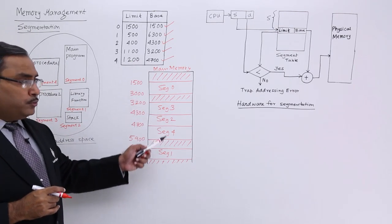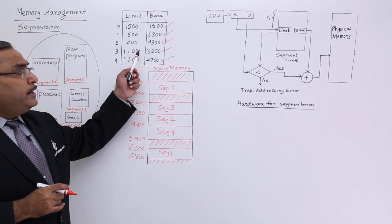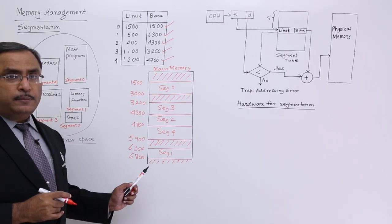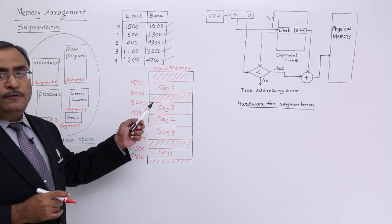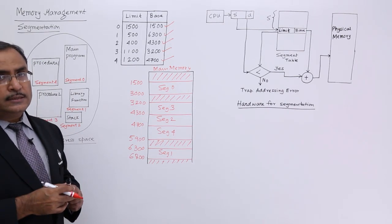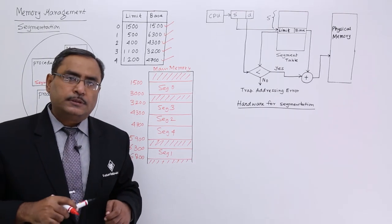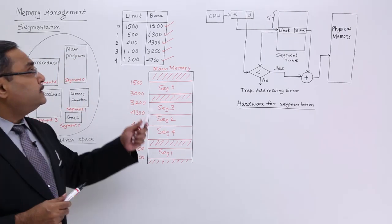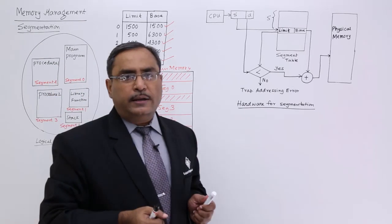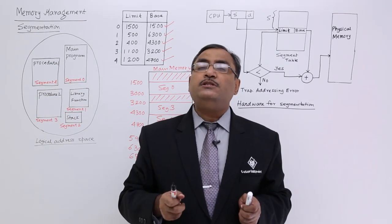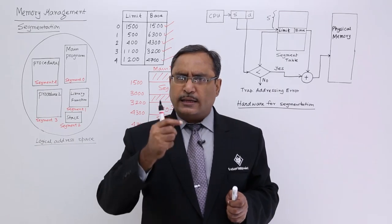This is the segmentation table, or segment table, and this is the memory map. The segment table is having two columns: one is the limit — which means the size of the segment — and the other is the base, which means the starting address of the segment in the computer's memory.